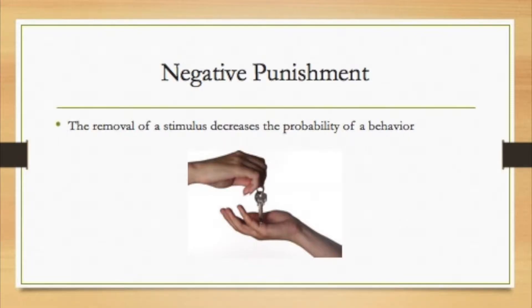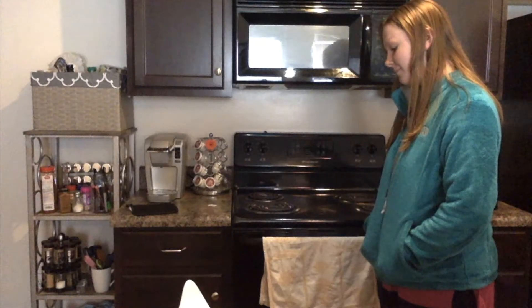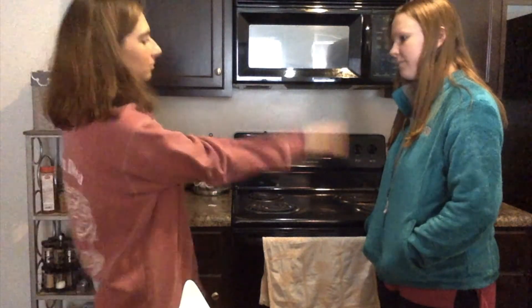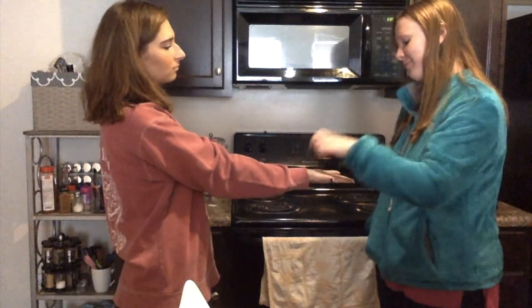A third type is negative punishment, where the removal of a stimulus decreases the probability of a behavior. An example would be getting your car taken away for staying out past curfew.